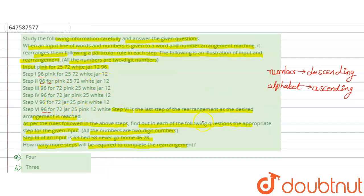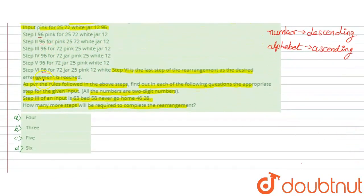Now we have the machine input. The input is: we have the third step, which is 63 bad 58 never go home 46 and 28.